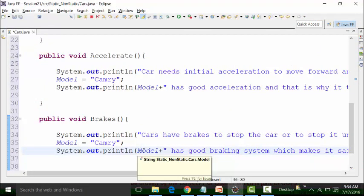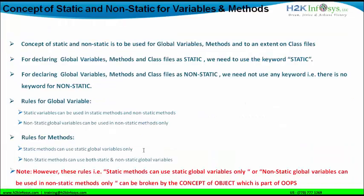Now let us go to the concept of non-static global variables. We have covered static variables — we have seen that they can be used in static methods and non-static methods. Now let us take the rules of non-static global variables. Non-static global variables can be used in non-static methods only. This is a stringent rule. Let us see that rule.